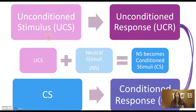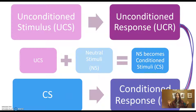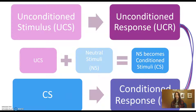Starting off, we always begin with an unconditioned stimulus and an unconditioned response — that is your first pair, UCS and UCR. This is something that is a reflex, something that already exists in you. You're in the shower and hot water starts spraying out and you jump. You eat bacteria and get food poisoning and you throw up. You drink too much alcohol and you throw up. Somebody makes a loud noise behind you and you startle. These are all reflexes — not something you have to learn, not something anybody has to teach you. This is something your body naturally does.